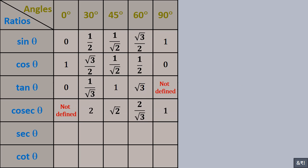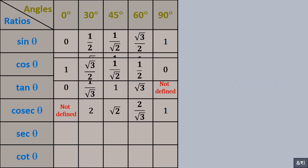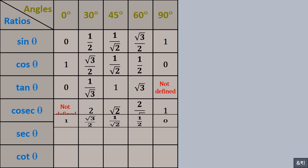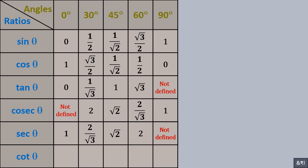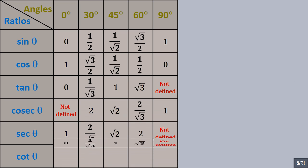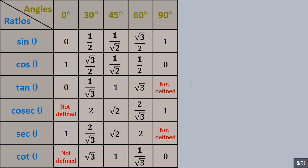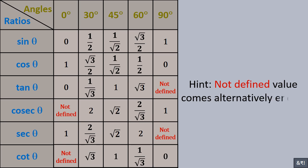Sec theta is the reciprocal of cos theta. Cot theta is the reciprocal of tan theta. Hint: the 'not defined' values come alternately, end to end.